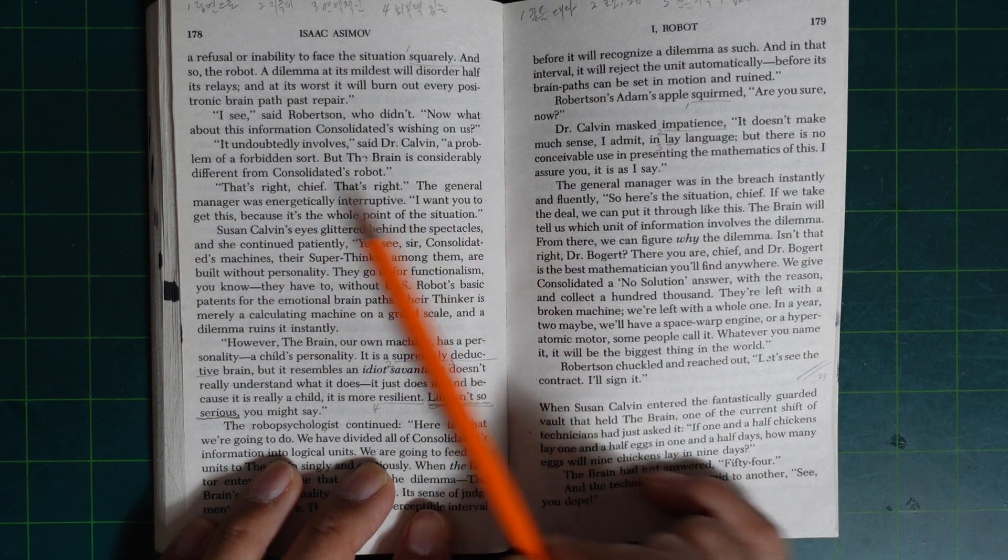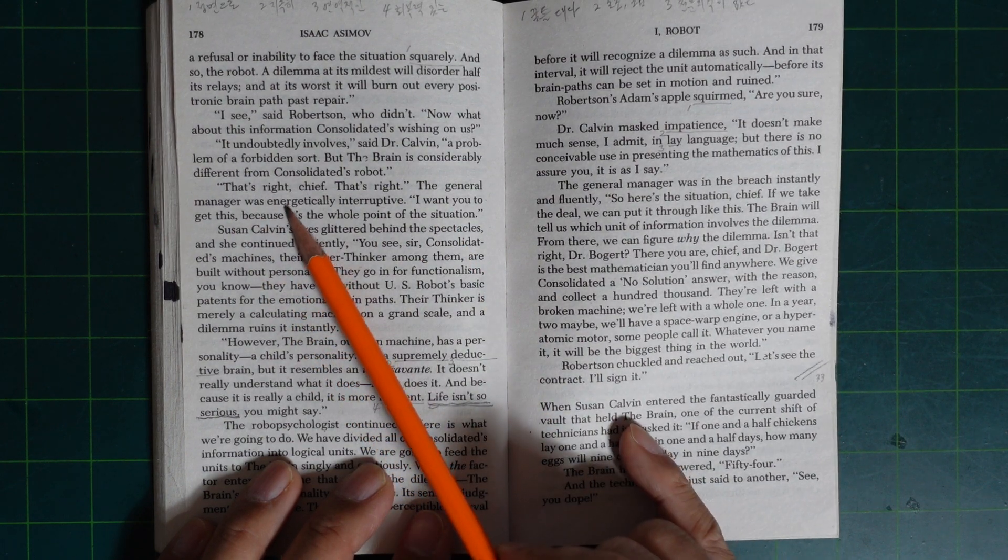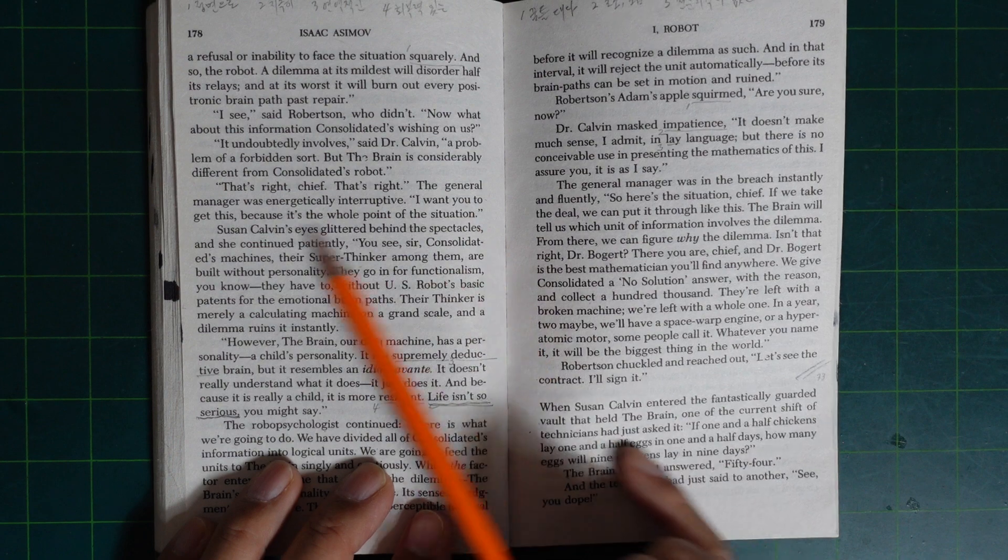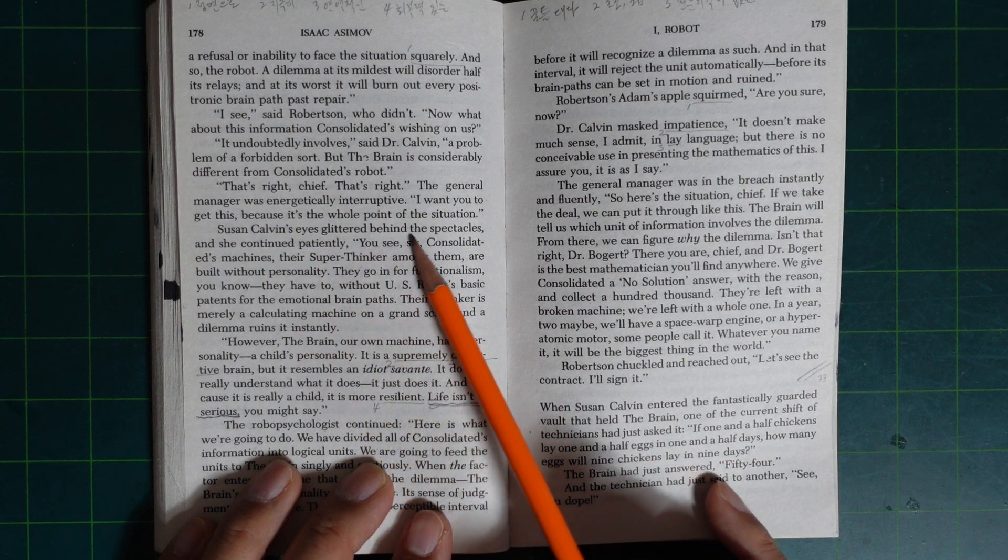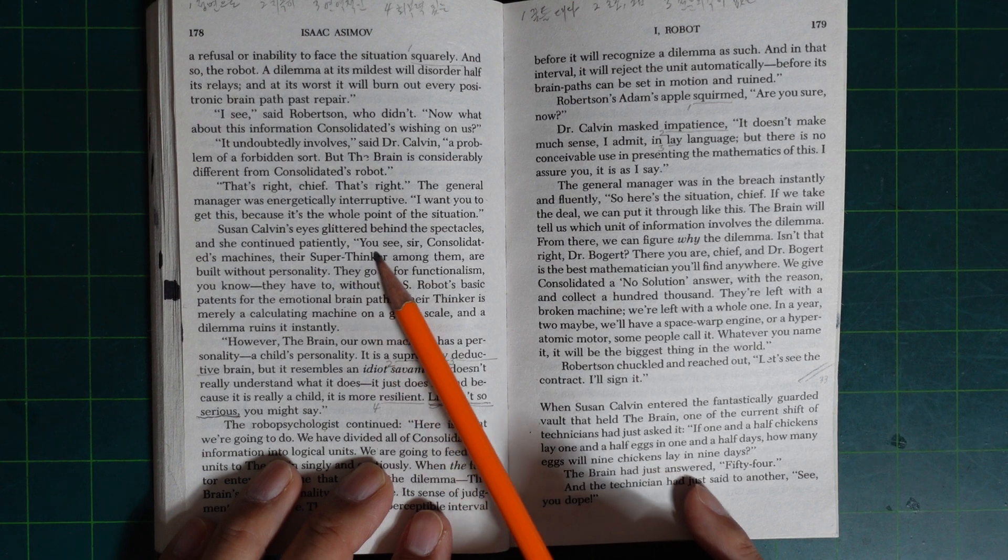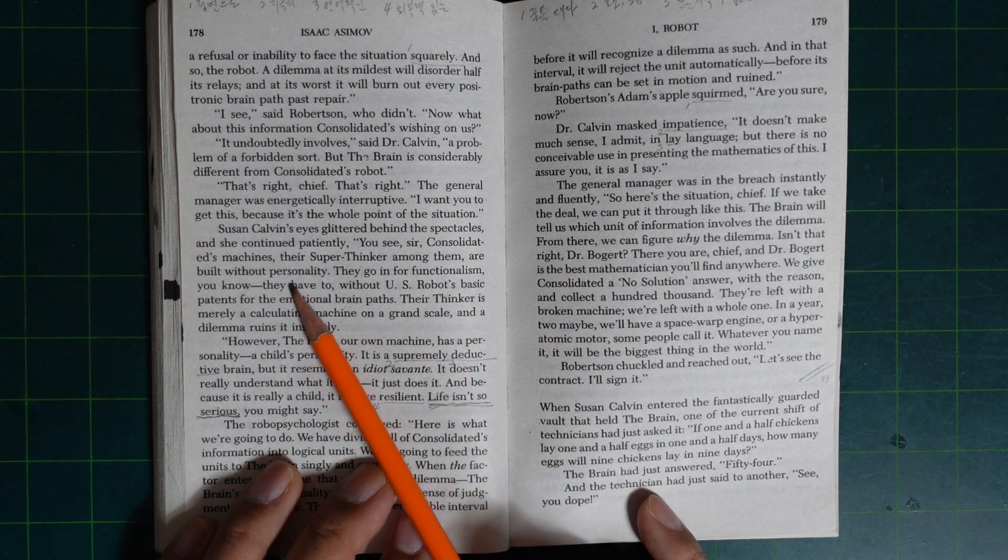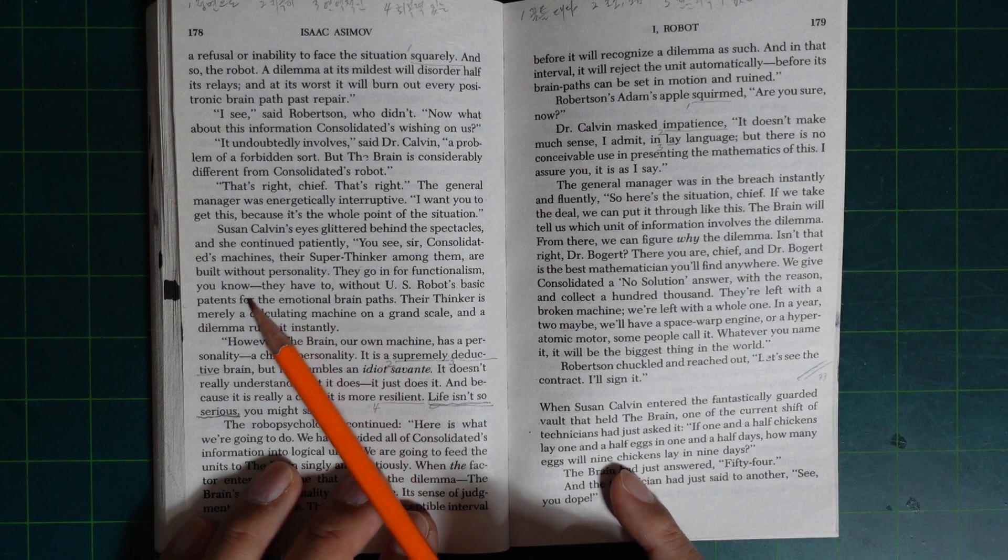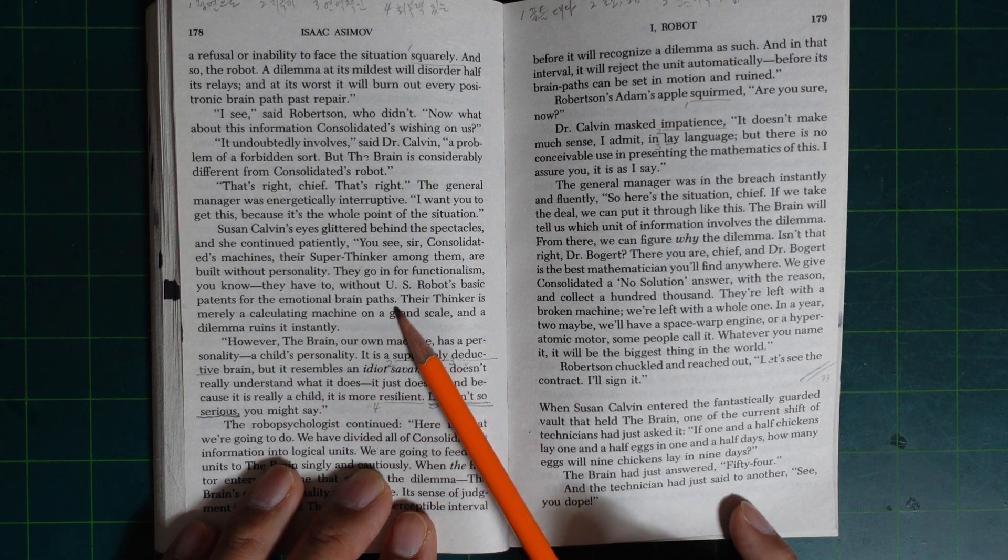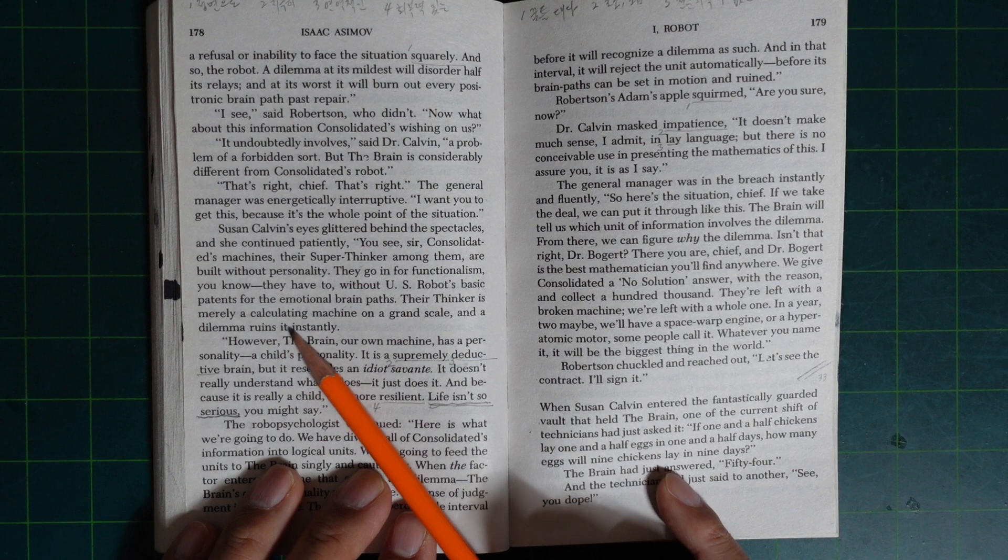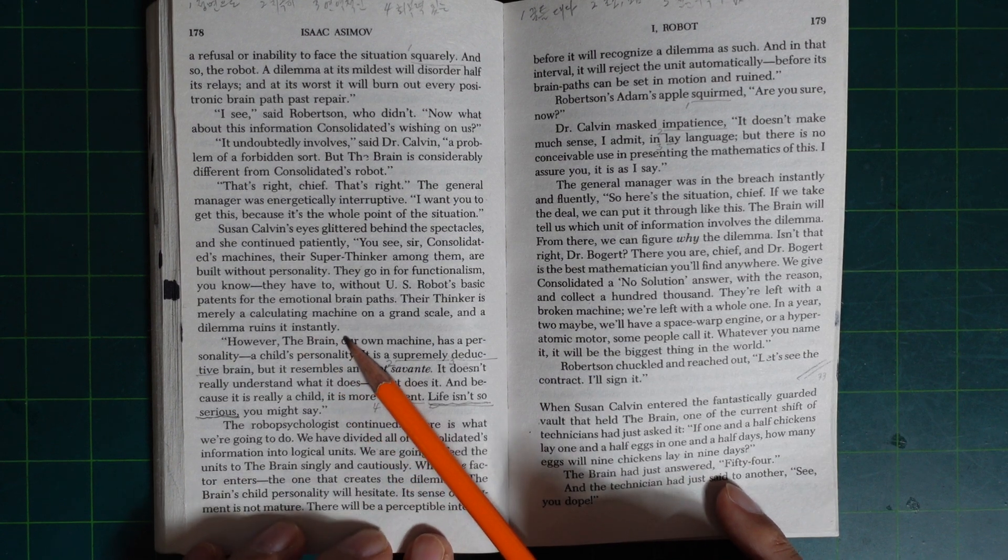But the Brain is considerably different from Consolidated's robot. That's right, Chip, that's right. The general manager was energetically interruptible. I want you to get this because it's the whole point of the situation. Susan Calvin's eyes glittered behind her spectacles, and she continued patiently. You see, Consolidated's machines, their super thinker among them, are built without personality. They go in for functionalism. You know, they have to, without U.S. Robot's basic patents on the emotional brain paths. Their thinker is merely a calculating machine on a grand scale, and a dilemma ruins it instantly.